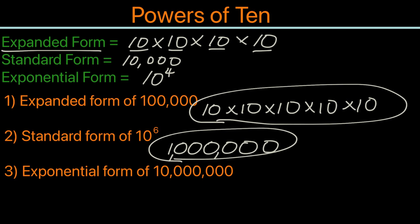For the third example, we want to find the exponential form of 10 million. To find that, we know the base has to be 10, and let's see how many zeros there are: 1, 2, 3, 4, 5, 6, 7. So that means it would be 10 to the power of 7, and that would be the exponential form.